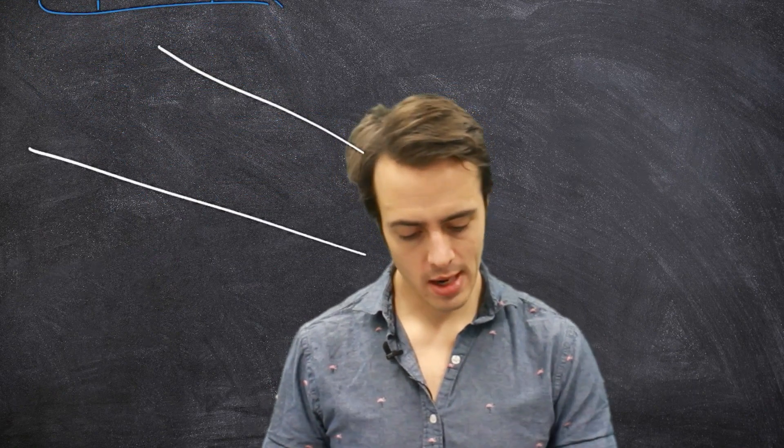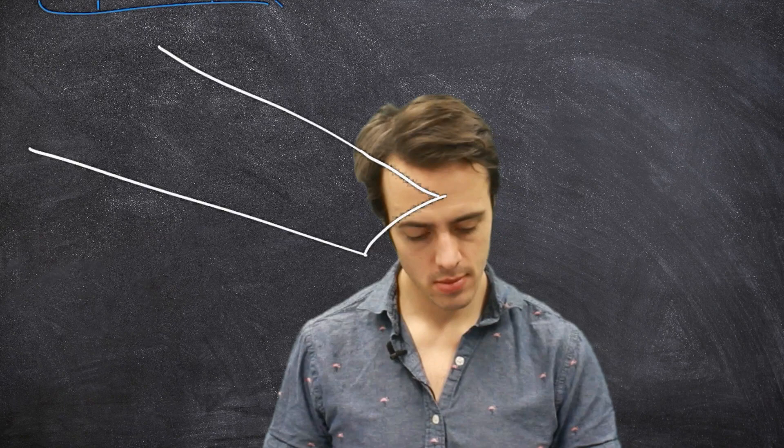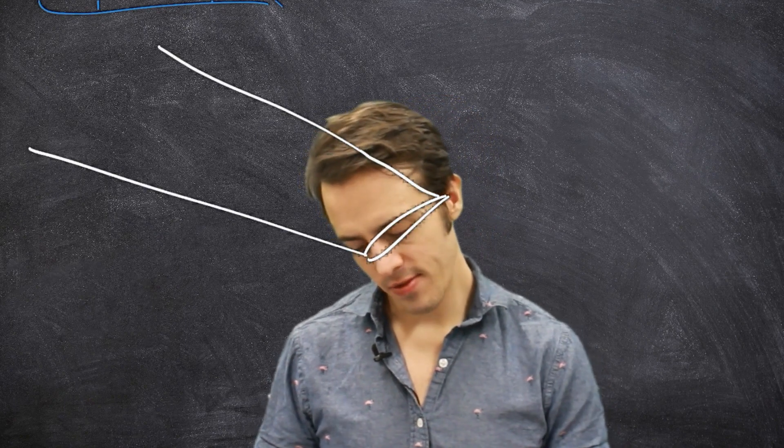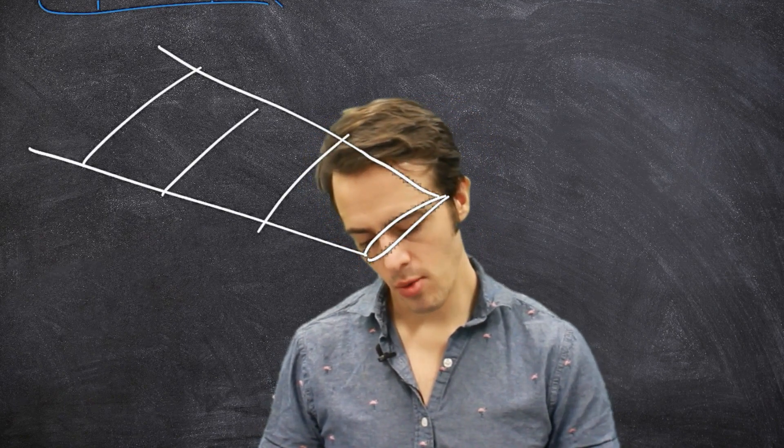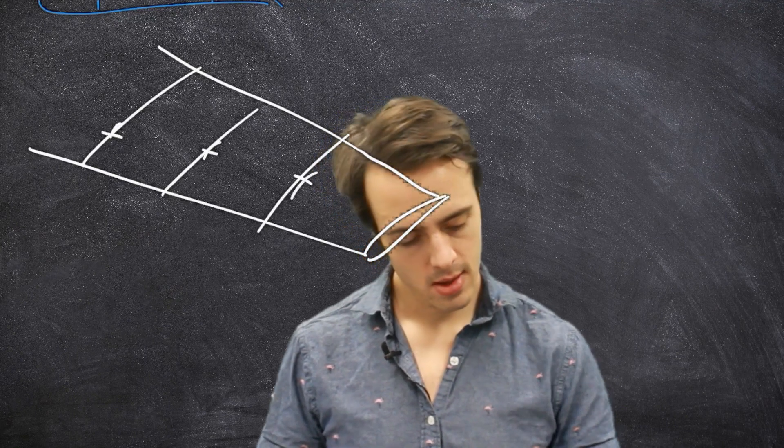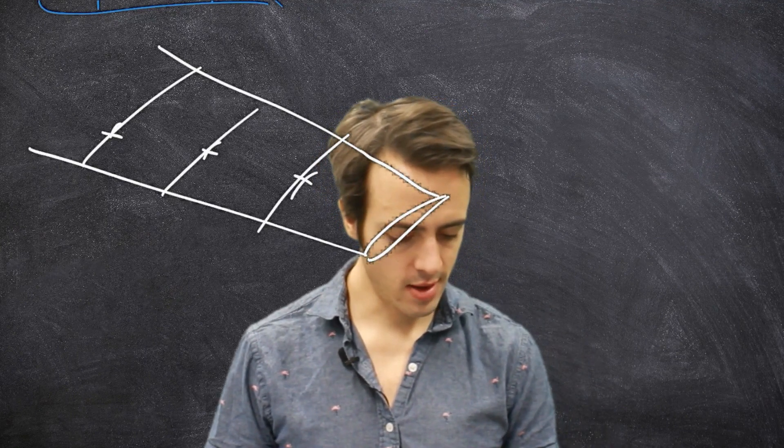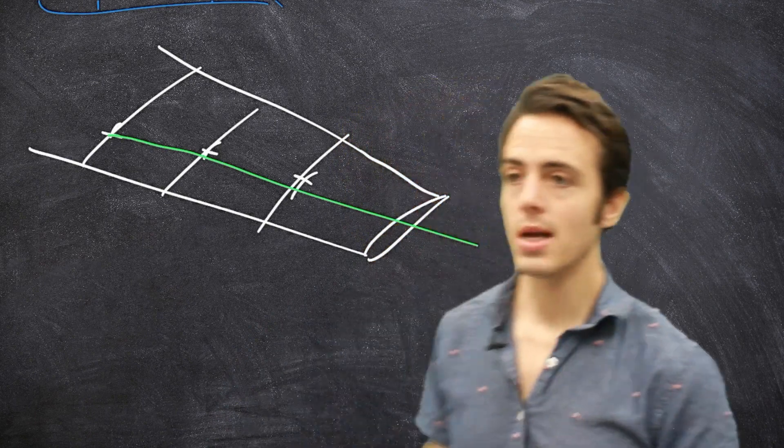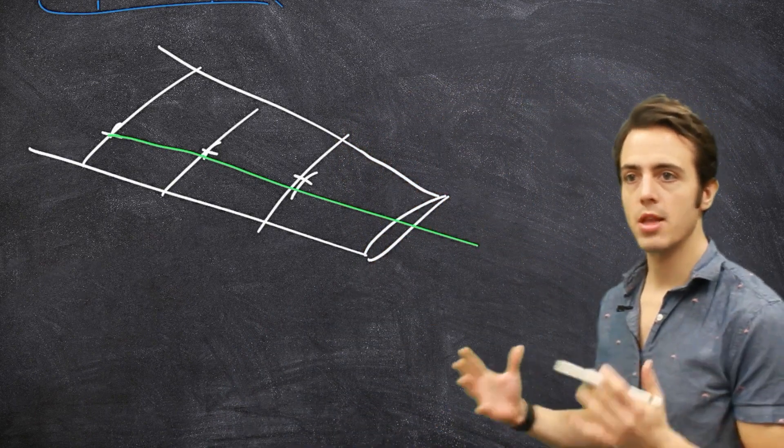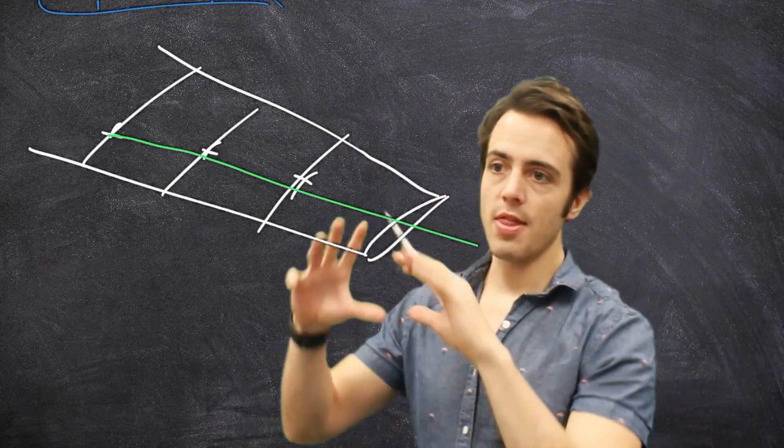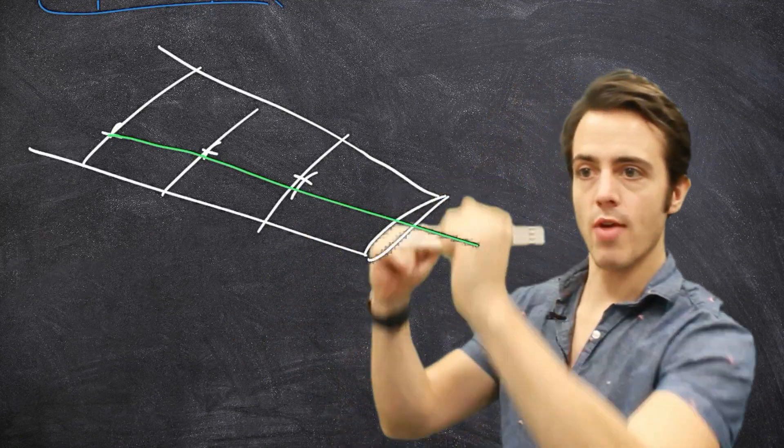But it's useful for us because it will then define what we said was the elastic axis of the wing. So if we've got our wing like this and we can define, for example, cutting sections through it, we can define shear centers, then our elastic axis would be a line drawn between those shear centers. And that would mean that that is effectively where our wing will want to twist around.